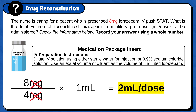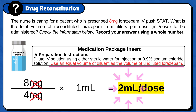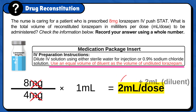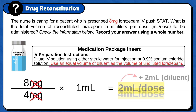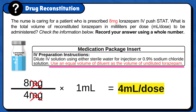Now, according to the instructions, use an equal volume of diluent as the volume of undiluted lorazepam. Since we have 2mL of lorazepam, we will add 2mL of diluent, and our final answer is 4mL per dose. So the total volume of reconstituted lorazepam is 4mL per dose.